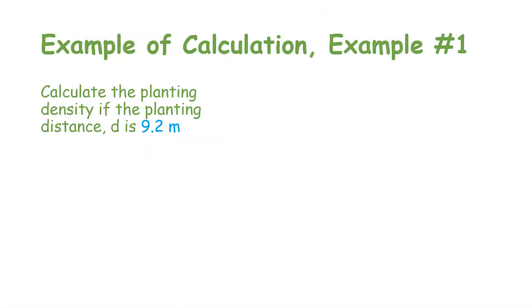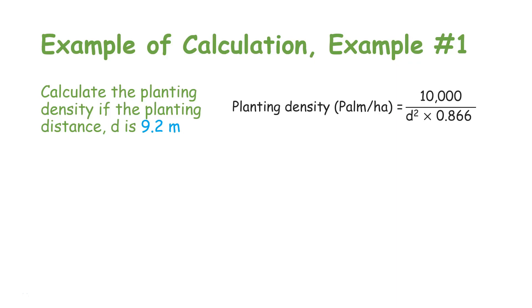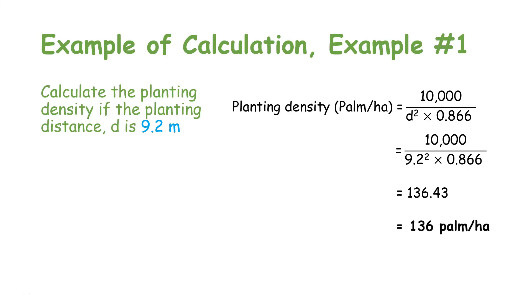As an example, calculate the planting density if the planting distance d is 9.2 meters. Using the equation, the planting density will be 136 palms per hectare.